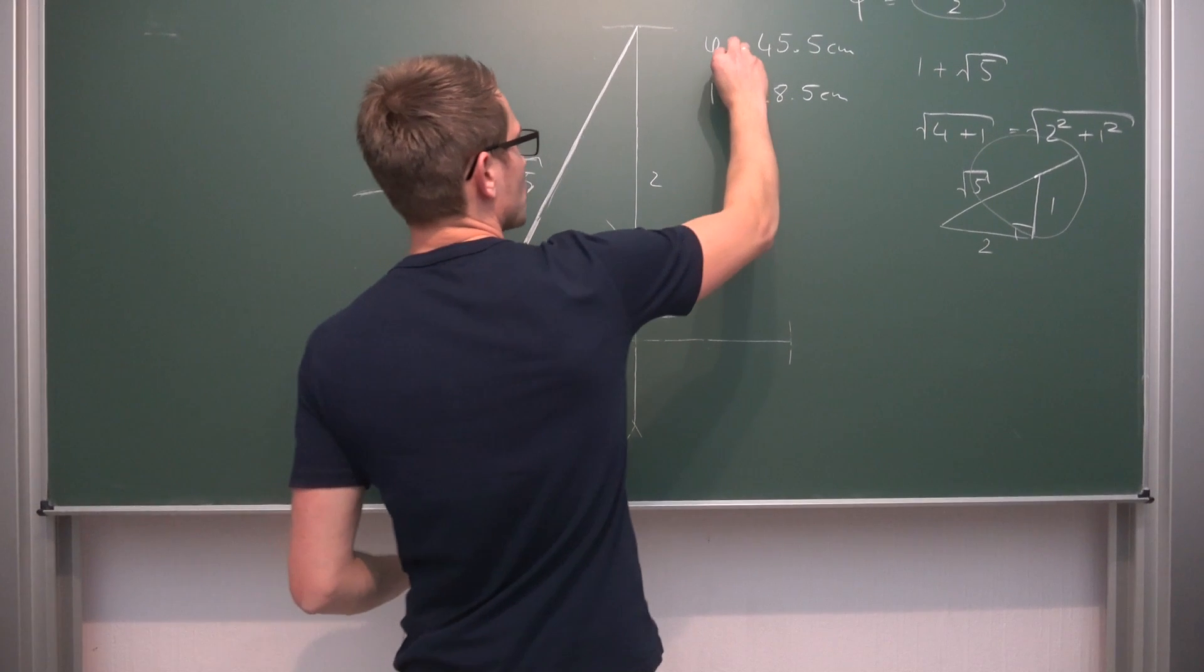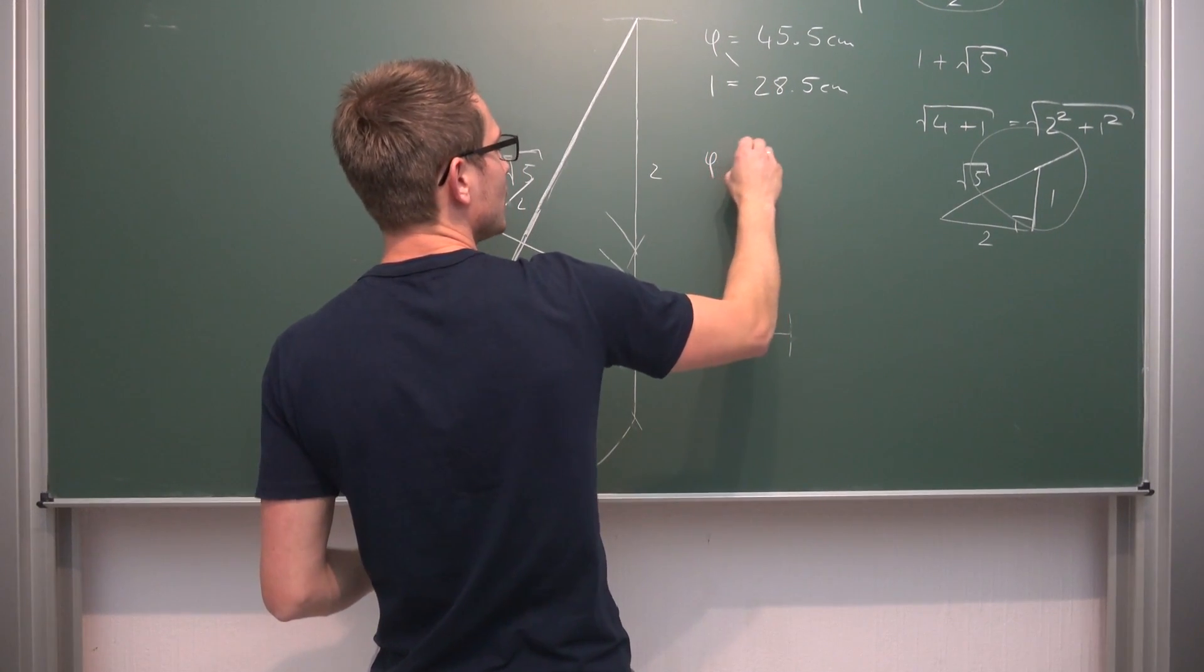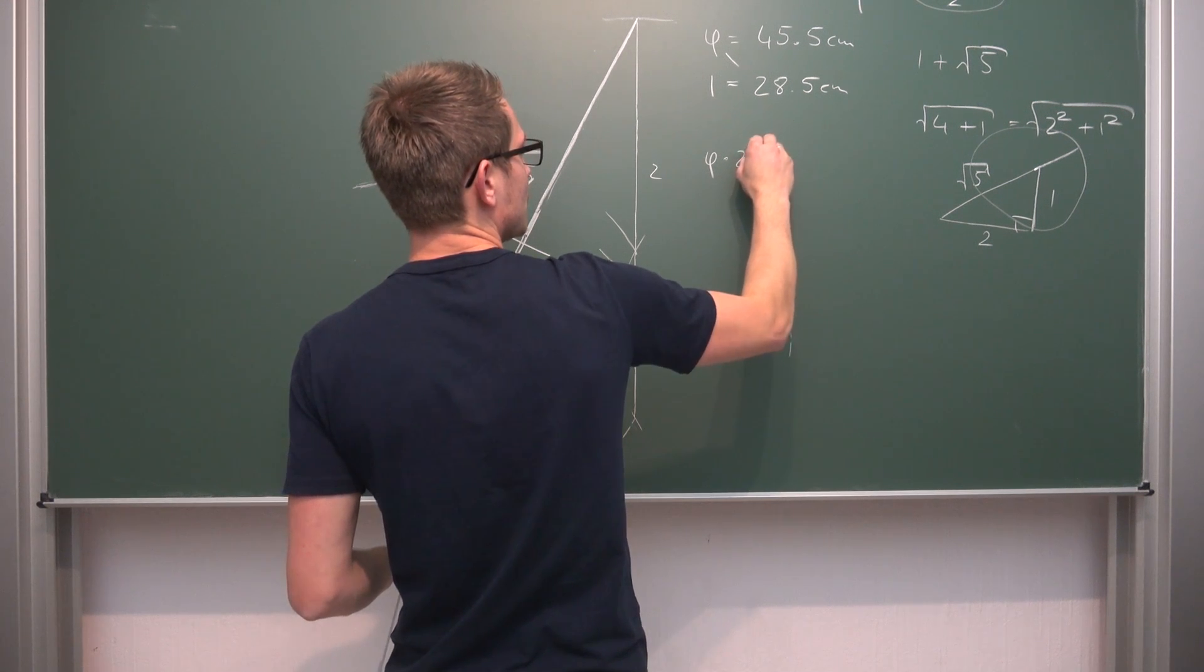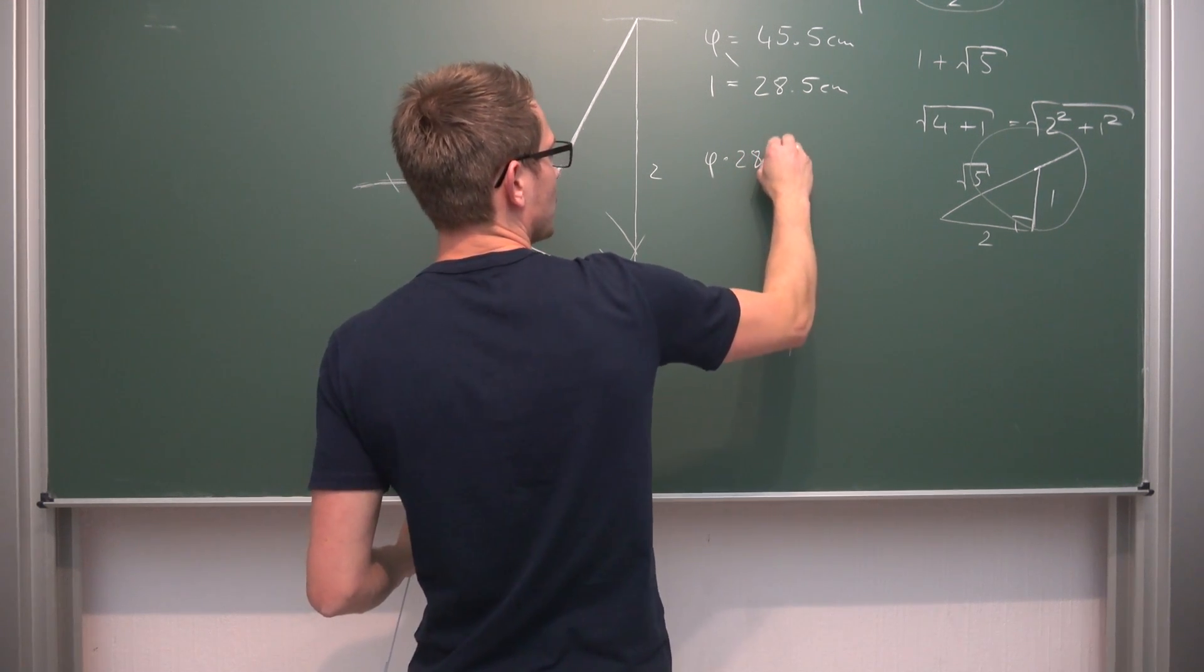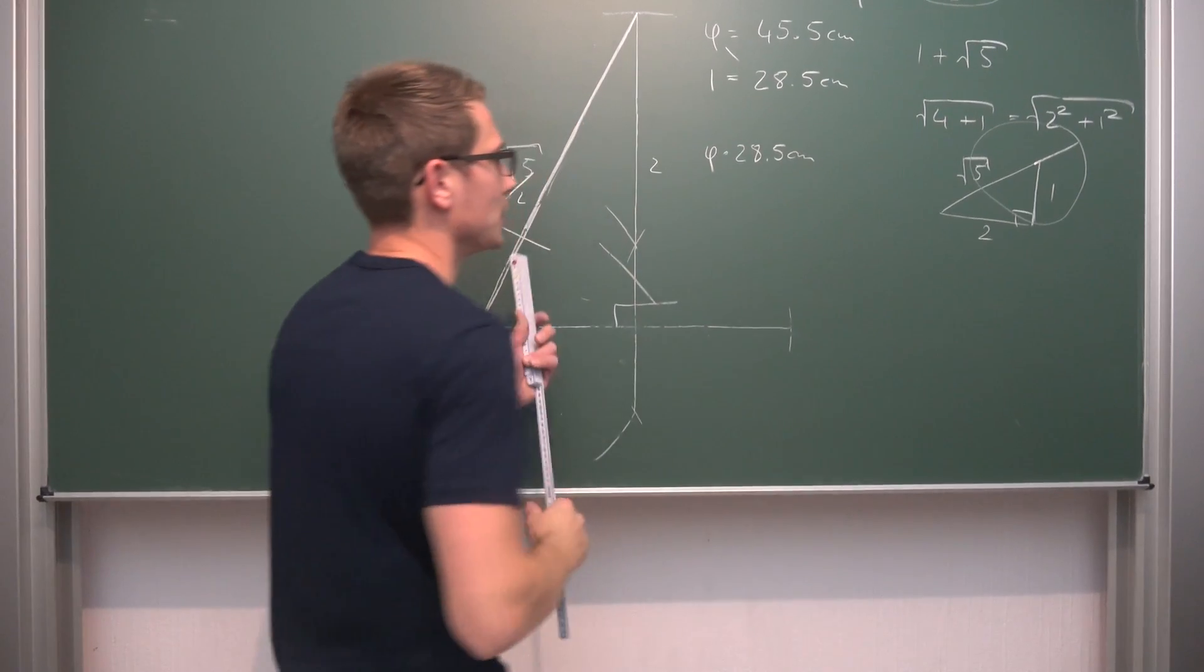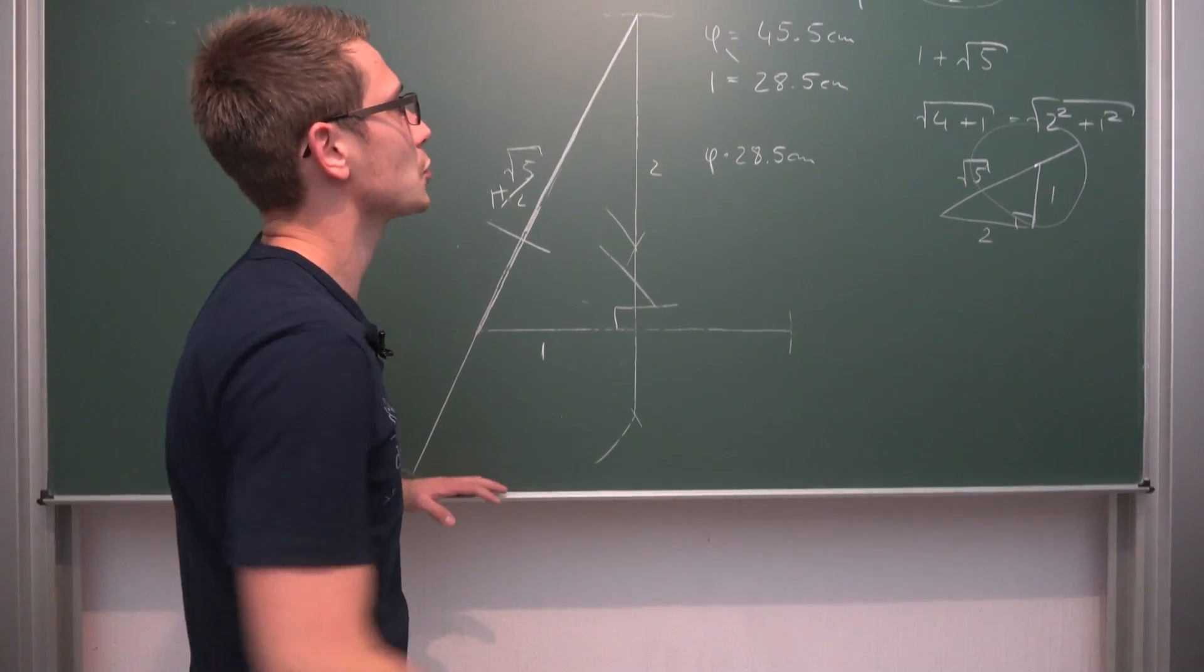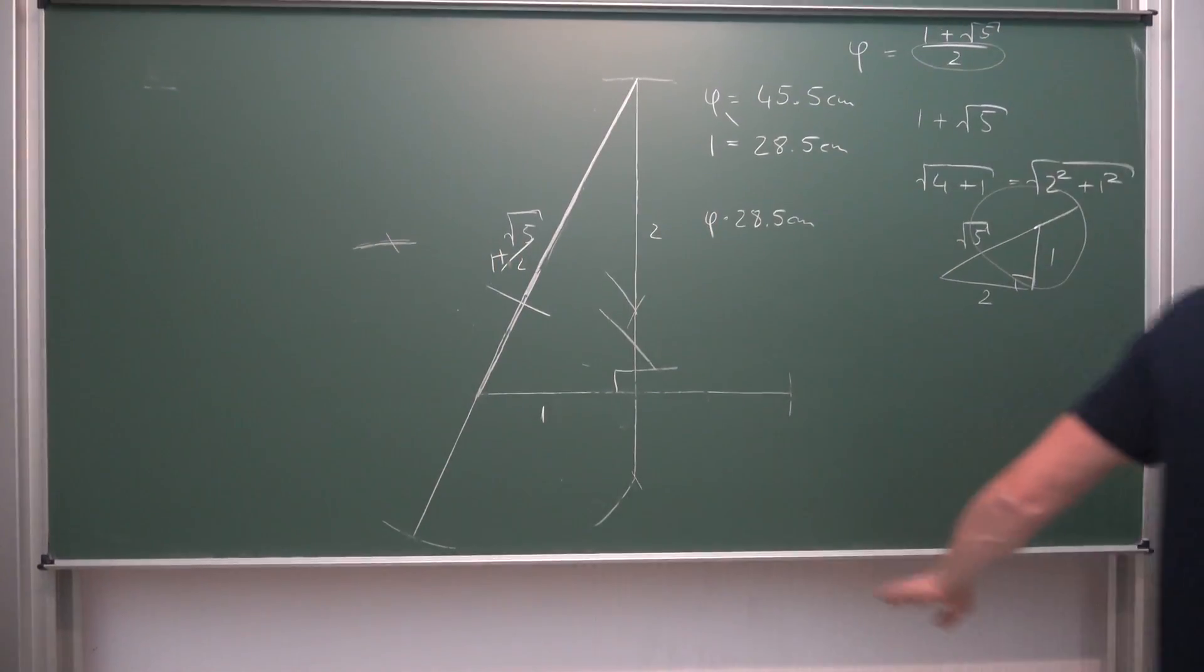So 1 is equal to 28.5 centimeters. We are now going to see what the actual value of our golden ratio must be. So this is just cross multiplication, phi times 28.5 centimeters divided by... And now I'm going to get myself Wolfram Alpha and see if we are going to arrive at 45.5 centimeters.